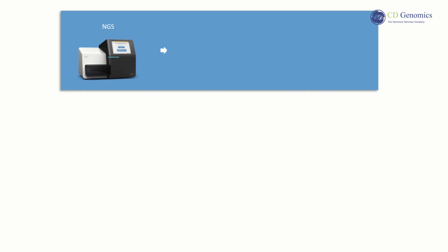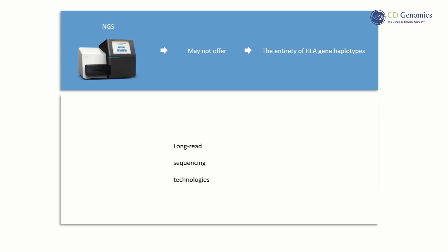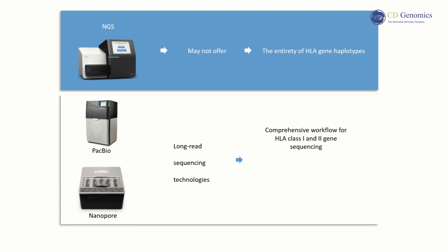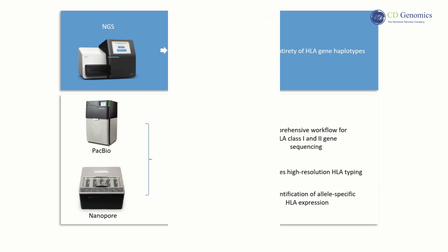NGS alone may not offer exhaustive insight into the entirety of HLA gene haplotypes. To address these challenges, a comprehensive workflow for HLA Class I and II gene sequencing employs long-read sequencing technologies such as SMRT and nanopore. This strategy facilitates high-resolution HLA typing and the identification of allele-specific HLA expression, enhancing our understanding of HLA diversity and function.